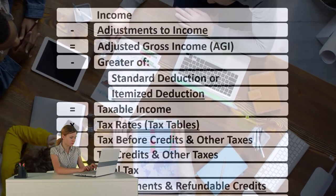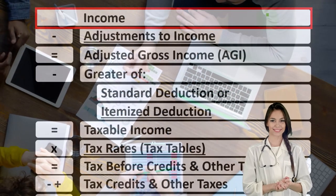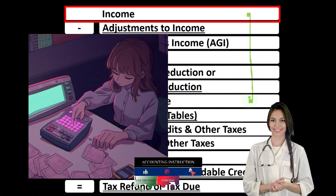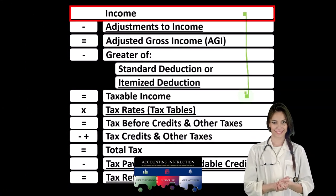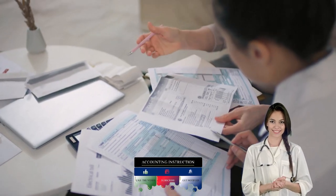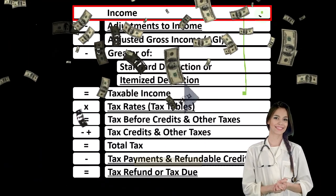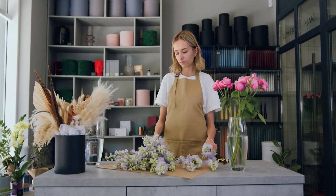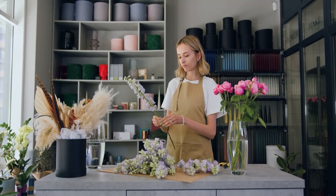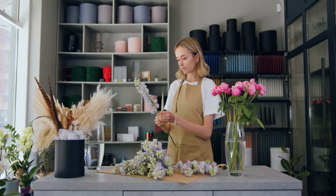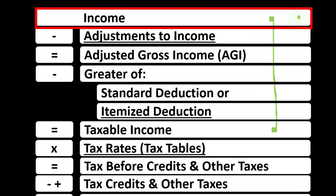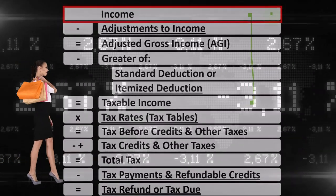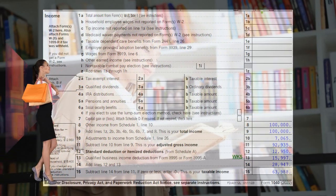Looking at the income tax formula, we're focused on line one — that being income. Remember, the first half of the income tax formula is in essence an income statement, just the scaffolding with many other schedules and forms flowing into these line items. With the income line, we're focusing on Schedule C, often used for sole proprietorships, which is its own income statement: income minus expenses, essentially business deductions. The net income of Schedule C flows into the income line item of the income tax formula, representing page one of Form 1040.